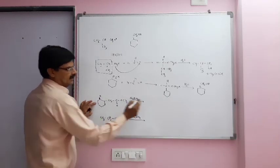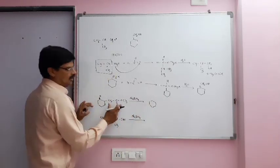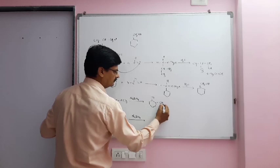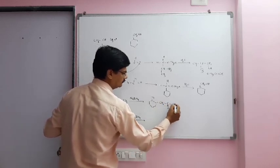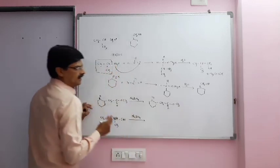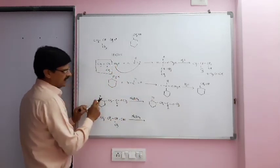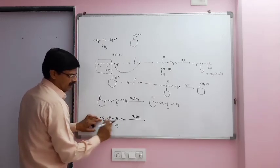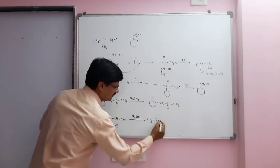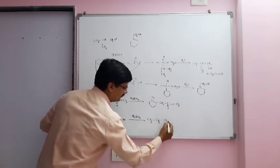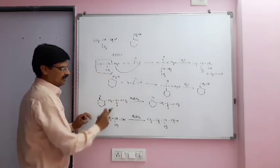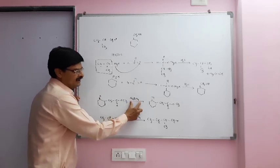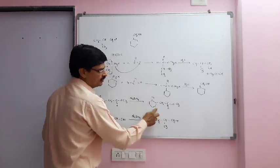Hydrolysis gives CH3CH(CH3)CH2OH and Mg(OH)X is liberated. For the second compound, we consider cyclohexyl magnesium halide as the Grignard reagent. When reacted with HCHO, the cyclohexyl part attaches and on hydrolysis we get cyclohexane-CH2OH. On reduction with sodium borohydride (NaBH4), the final product is obtained from the carbonyl compound.